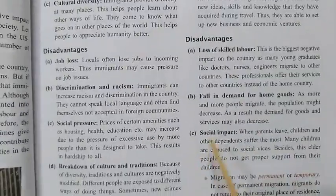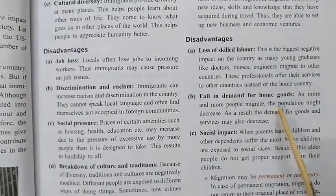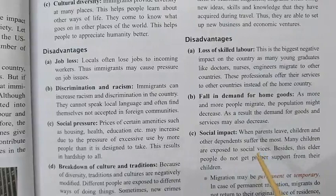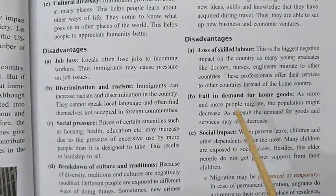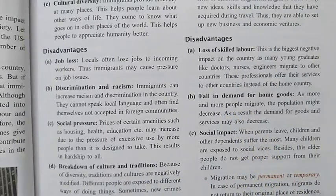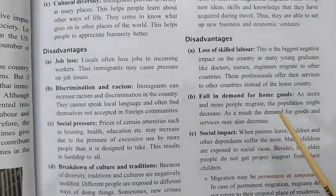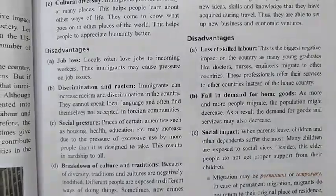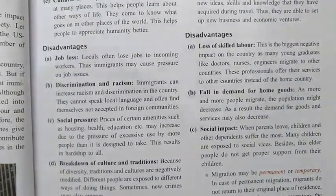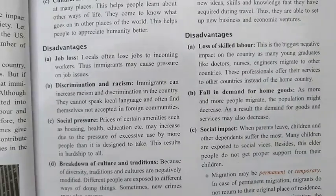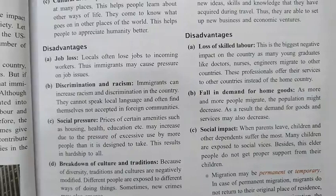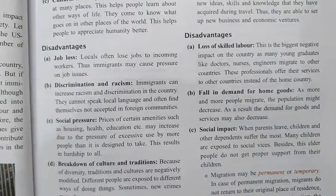The second disadvantage for the home country is a fall in demand for home goods. When very large numbers of people migrate out, population decreases and domestic demand falls. We can see this in Syria — Syria had a very large population, but when large parts came under the terrorist group ISIS and they started persecuting local people, hundreds of thousands migrated to other European countries, leaving villages and cities depopulated.